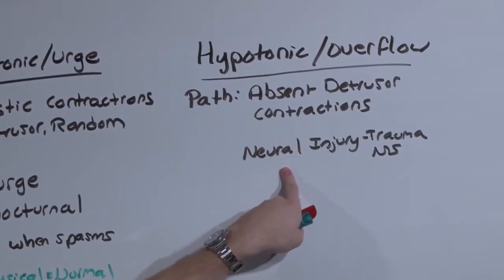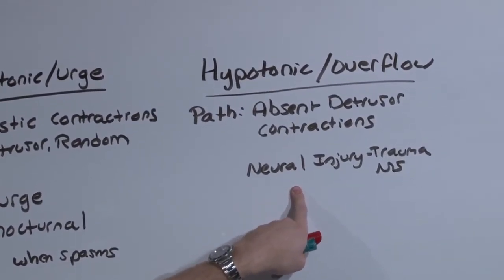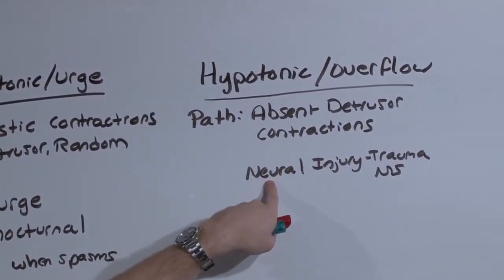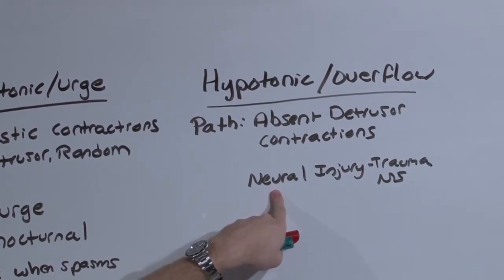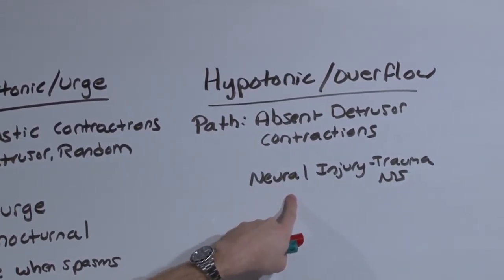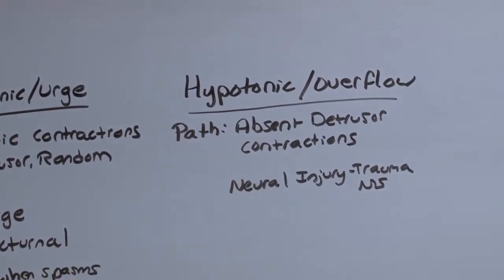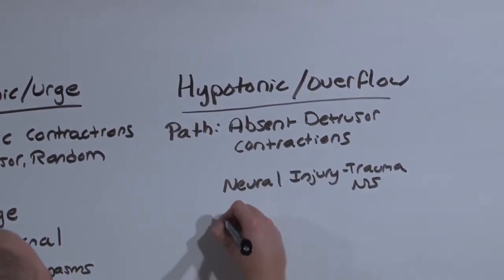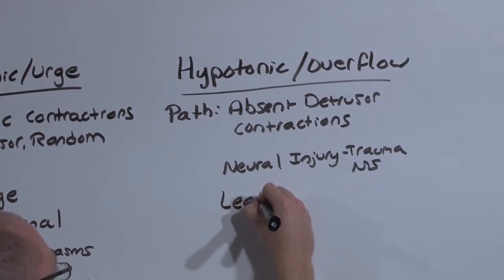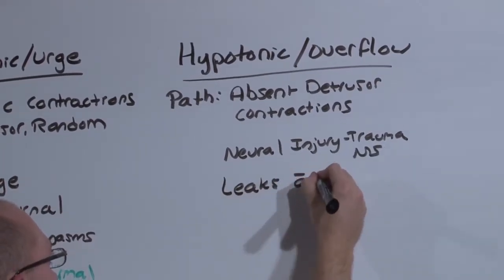Either the patient can't feel that they're full to initiate a contraction, or they may even be able to feel they're full, they just can't initiate that contraction. Because of the neural injury, there are no contractions of the bladder. So what happens is that the bladder fills and leaks a little bit of urine before it explodes.